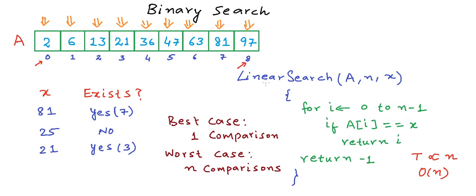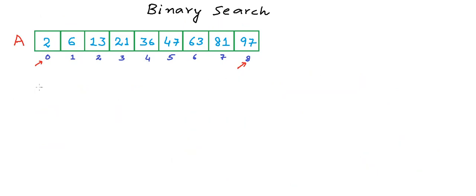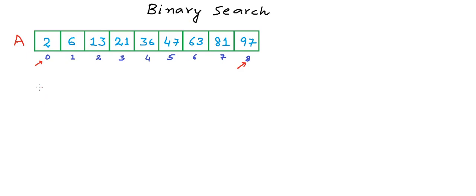Now let us try to improve this algorithm using the extra property of the array that it is sorted. Let's say we want to find out whether the number 13 exists in the array A, so x is 13. We will use a different approach this time — instead of comparing x with the first element as we do in linear search, we will compare it with the middle element in the array. The size of this array is 9, so the middle element will be at index 4. Now there can be three cases here.